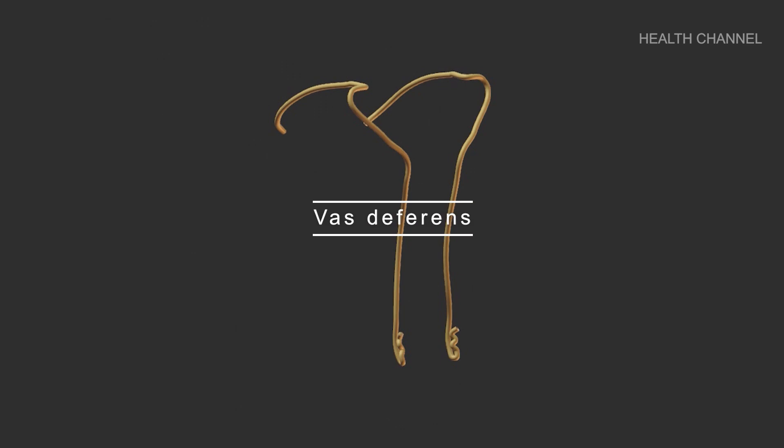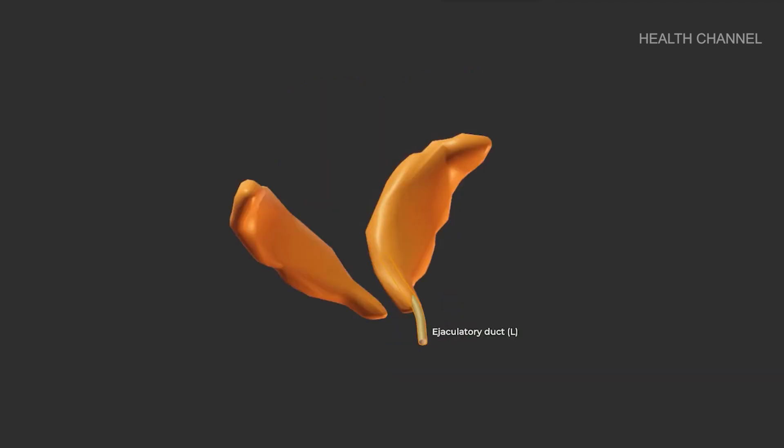The vas deferens is a long muscular tube that travels from the epididymis into the pelvic cavity to just behind the bladder. In preparation for ejaculation, the vas deferens transports mature sperm to the urethra. Ejaculatory ducts are formed by the fusion of the vas deferens and the seminal vesicles.